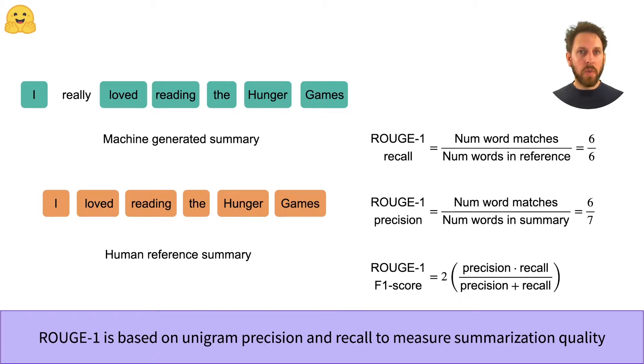To deal with these scenarios, we can also compute precision, which in the ROUGE context measures how much of the generated summary was relevant. In practice, both precision and recall are usually computed and then the F1 score is reported.